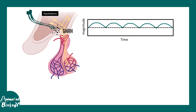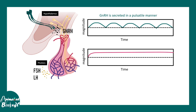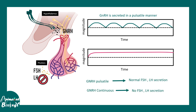GnRH is released in a pulsatile fashion, and this pulsatile release is important for the further release of FSH and LH. If this pulsatile release is blocked and GnRH is instead made to secrete at a sustained high level, FSH and LH release is also blocked. So the pattern of GnRH secretion is critical: pulsatile GnRH leads to normal FSH and LH secretion, while continuous GnRH leads to no FSH and LH secretion.